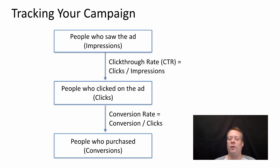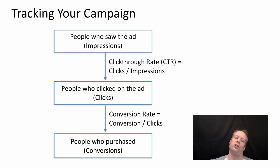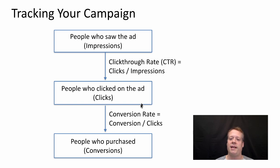And you want to know how many people purchased based upon coming from those locations — that one you're going to have to track on your own internally. Luckily, Google actually has the ability to hook up Google AdWords with Google Analytics, so you can track all of that within their platform. Given that you're tracking all that, you can then calculate things like the click-through rate, which is clicks divided by impressions, and the conversion rate, which is conversions divided by clicks.